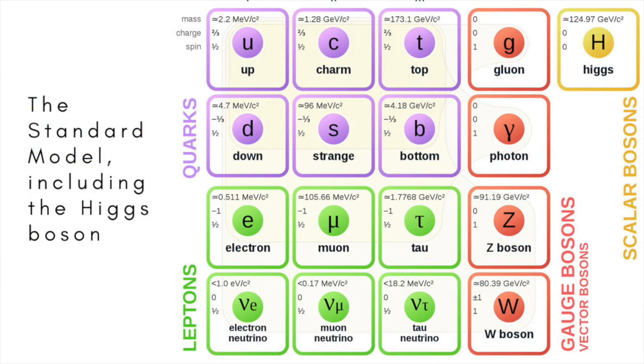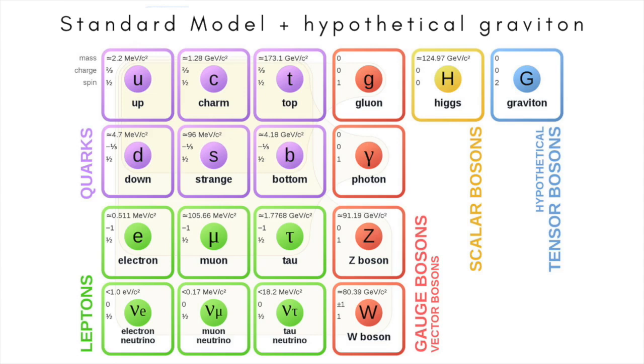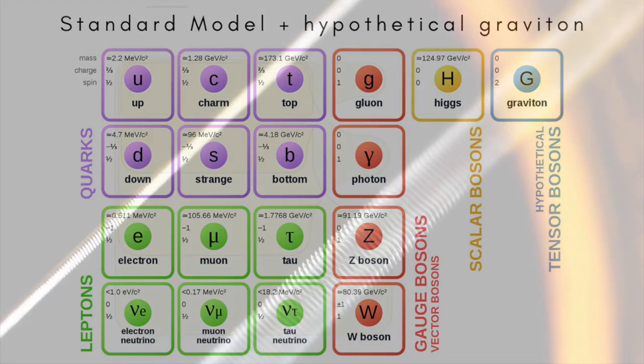But string theory wasn't consigned to the trash can of ideas that had passed their sell-by date. It made one extremely interesting prediction: the existence of a particle, a certain excitation of string, with a rest mass of zero and an intrinsic spin of two units. Theorists had long known that there ought to be such a particle. It was none other than the hypothetical exchange particle of gravitation, the graviton.